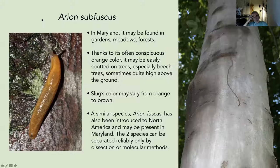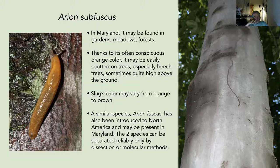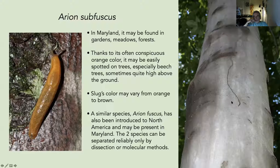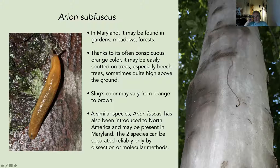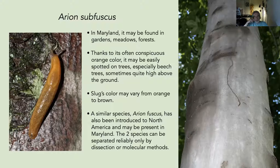Another common slug, Arion subfuscus, has a distinctive orange color, though it can be slightly brownish. It lives in gardens, meadows, and forests, and is a tree climber — very easy to spot on beech trees, sometimes going quite high. There is a similar species, Arion fuscus, which has also been introduced to North America and may be present in Maryland; the two are difficult to tell apart and may require dissection.